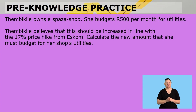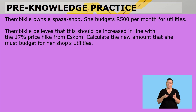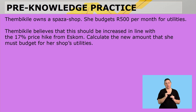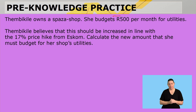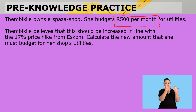The pre-knowledge practice — let's get to it. Timbikile owns a Spaza shop. She budgets 500 Rand per month for utilities. Timbikile believes that this should be increased in line with the 17% price hike from Eskom. Calculate the new amount that she must budget for her shop's utilities.